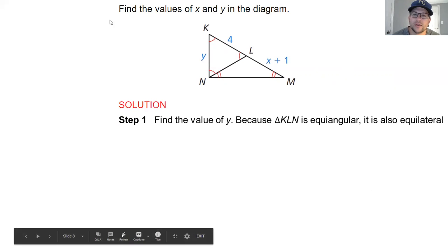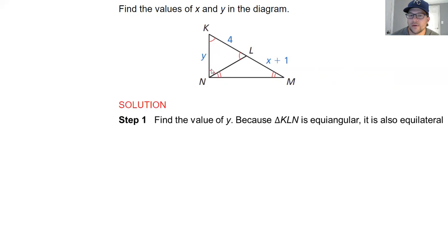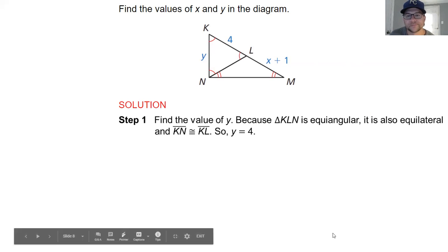Because the triangle where Y is marked is equiangular, notice how all three of these angles are equal, they're also equilateral. So all three of the sides have to be congruent to each other. This KN, which represents the Y, is also the same distance as your KL, which is the 4. So simply Y equals 4. That's kind of why we do that one first because it's a little bit easier.